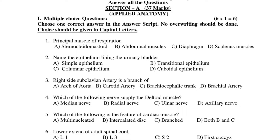Fifth question: Which of the following is a feature of cardiac muscle? A. Multinucleated. B. Intercalated disc. C. Branched. D. Both B and C.